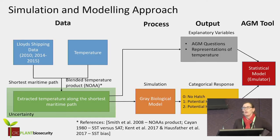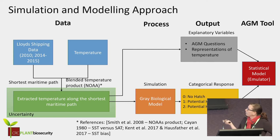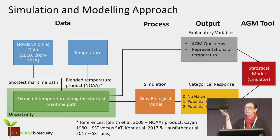This slide summarises the types of modelling we've done. To develop a risk profiling tool, we needed to know about ships, where they'd come from, and their first port of call into Australia, for which we used Lloyd's shipping data. We used 2010 Lloyd's data acquired through CSIRO, then moved to departmental data from 2014 to 2015. From that data, we worked out the shortest maritime path travelled from an at-risk port to the first Australian port, and extracted temperature along that pathway, since temperature governs the Gray biological model.